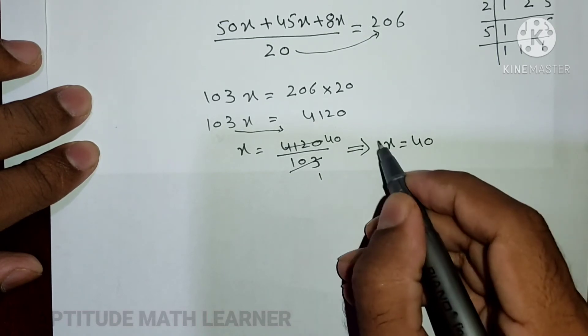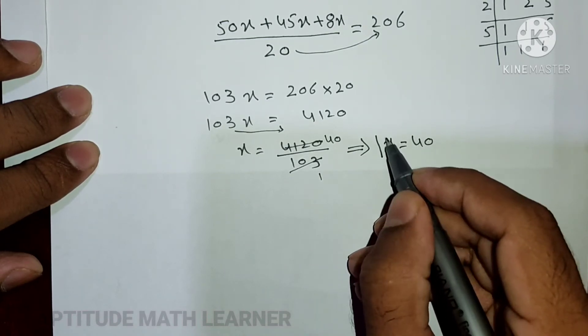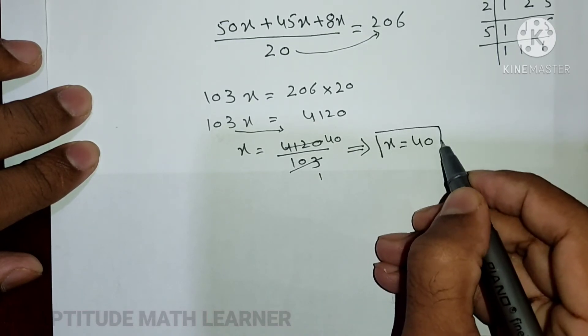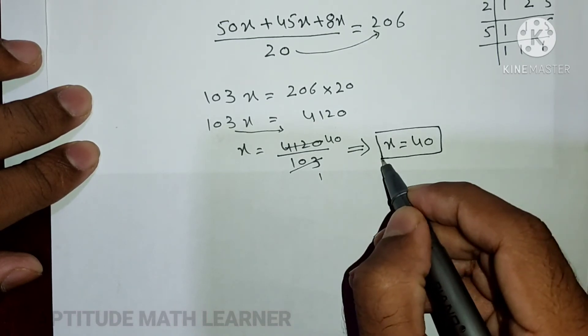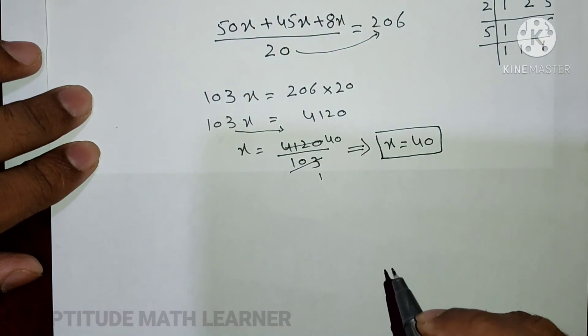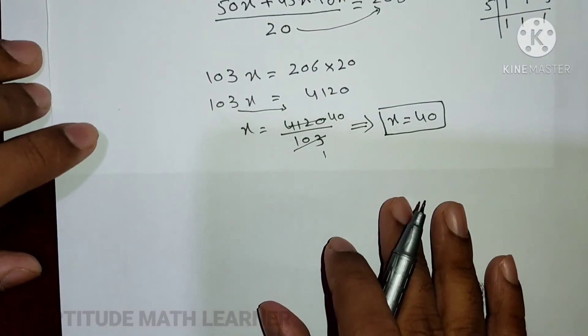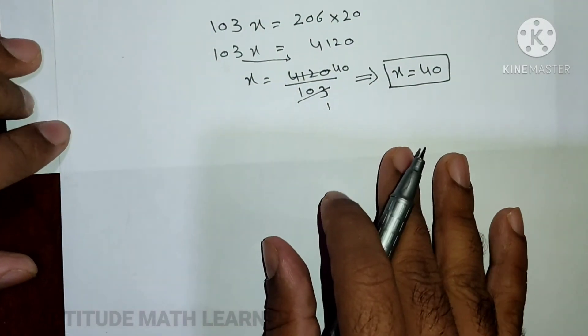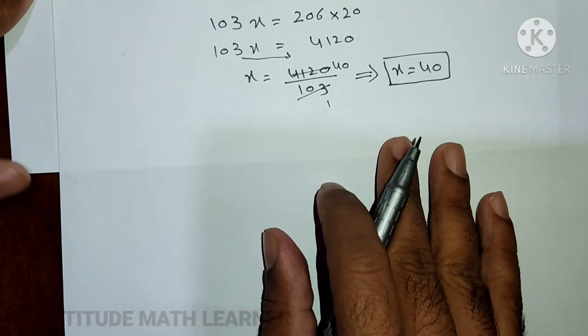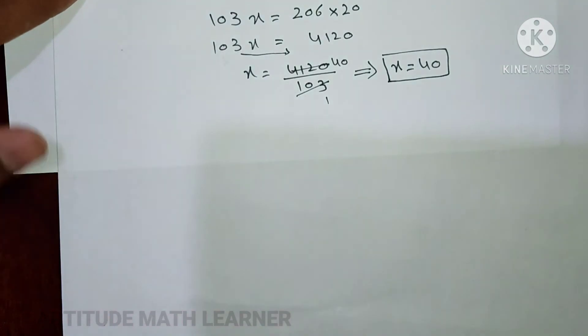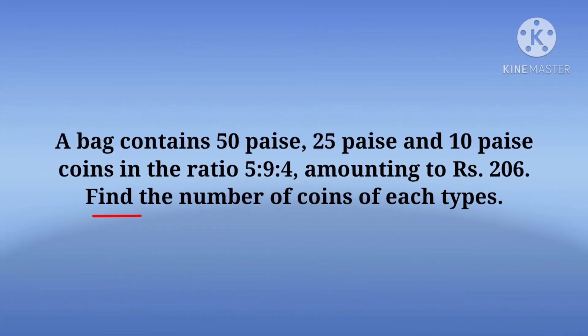Dividing 4120 by 103, we get x = 40. So x is equal to 40.